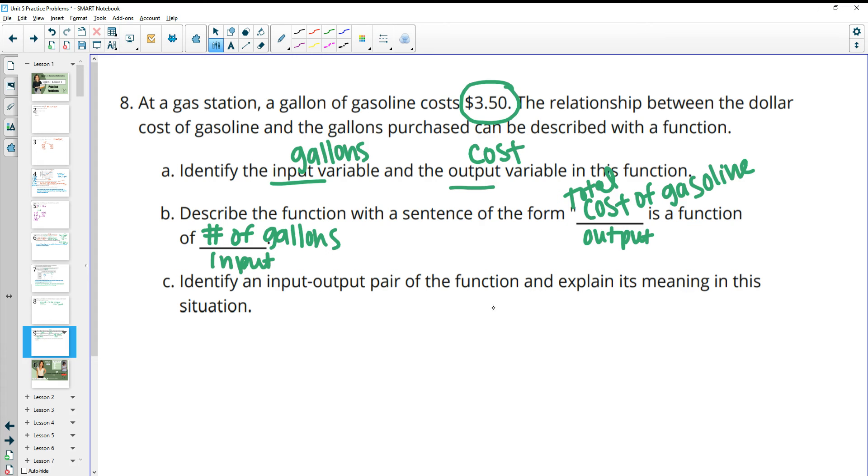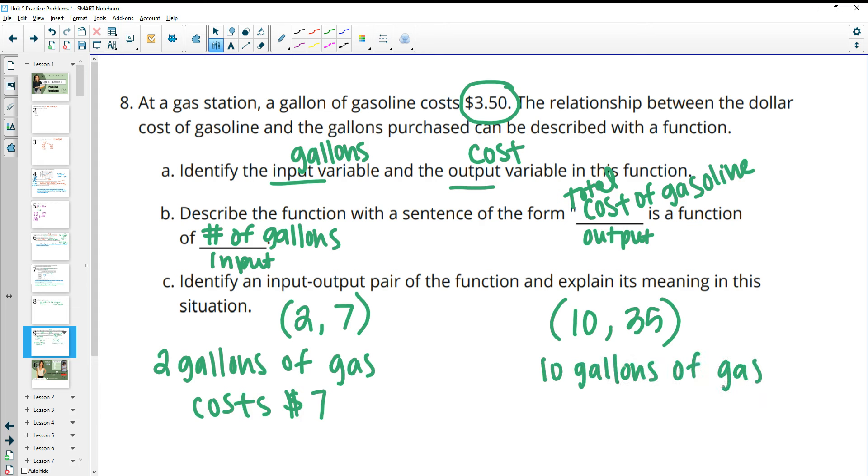So identify an input-output pair here and explain its meaning. Okay, so if I put in two gallons of gasoline in my car, it's going to cost me $7, two times $3.50. You know, you could have others, right? So you could do 10 gallons. And if we do 10 times $3.50, that's $35. So this 2, 7 would be two gallons of gas costs $7. For this one, 10 gallons of gas costs $35.